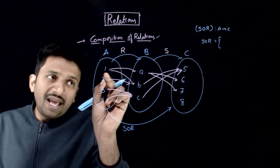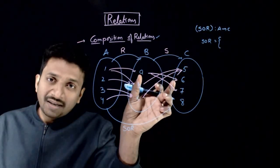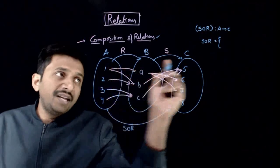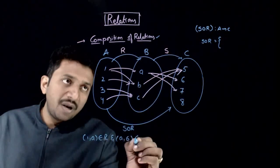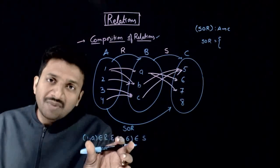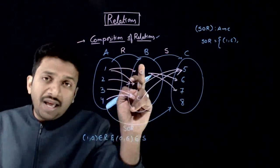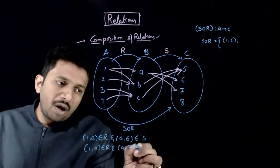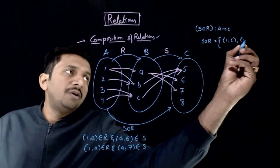From the definition, if (a, b) belongs to R and (b, c) belongs to S, then (a, c) belongs to SOR. So, (1, A) belongs to R and (A, 6) belongs to S, so (1, 6) belongs to SOR. Also, (1, A) belongs to R and (A, 7) belongs to S, so (1, 7) also belongs to SOR.